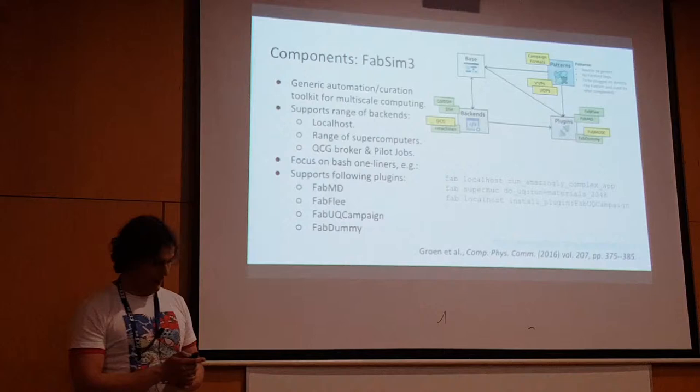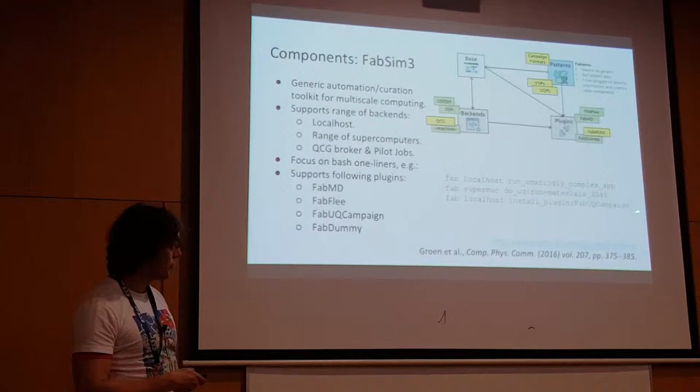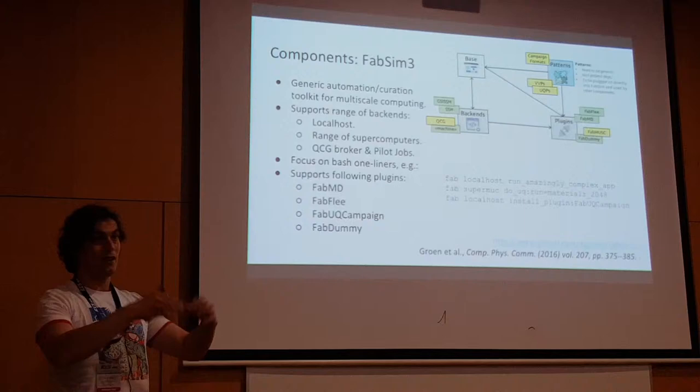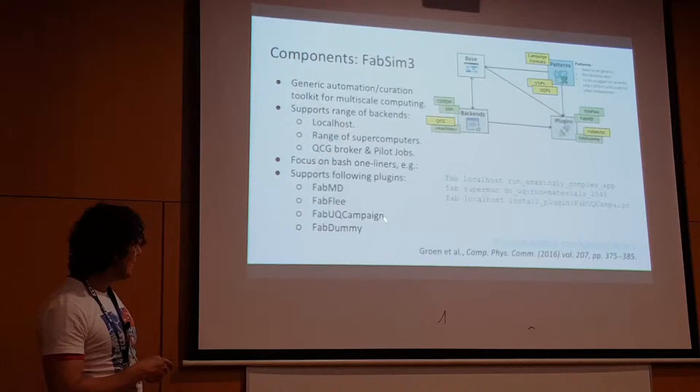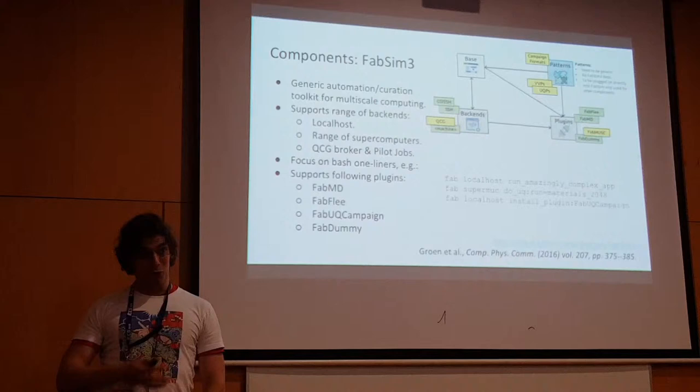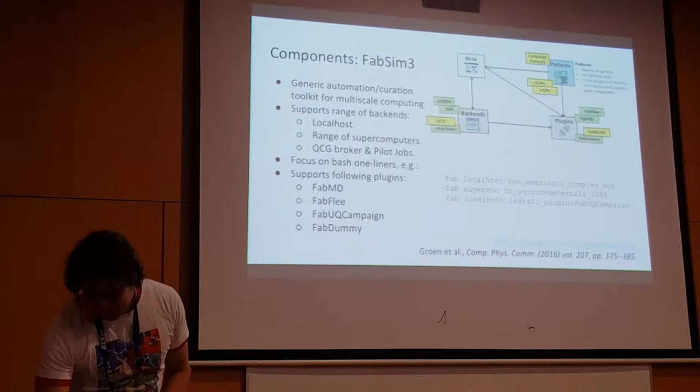PAPSIM3 has a plugin structure. The basic automation toolkit is quite simple, but you can have your domain-specific plugin that you develop for it, and then use all the automation and curation parts of PAPSIM completely tailored to your needs. To install a plugin you just run a command called install plugin, which goes to a specific GitHub repository and installs the whole thing. At the moment we have four plugins: one for molecular dynamics, one for migration, one focusing on climate modeling, and one for testing purposes so that people can copy it and make their own plugin.